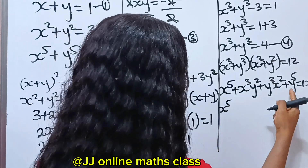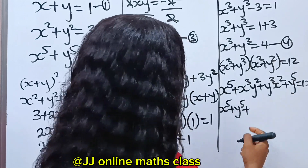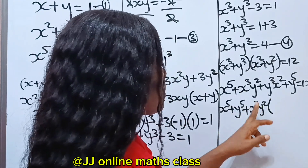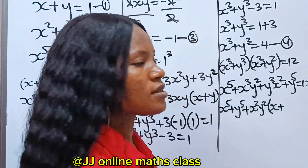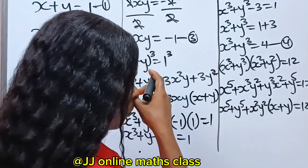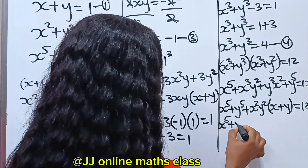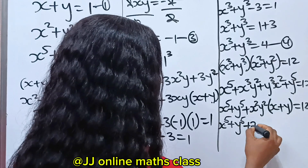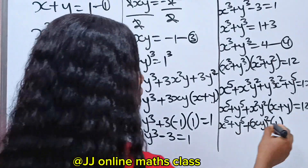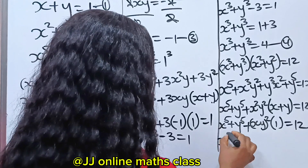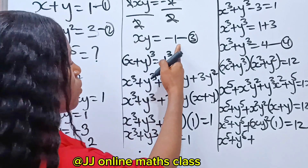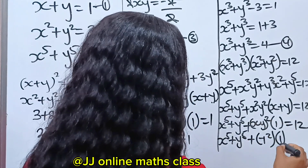Bringing x to the power of 5 and y to the power of 5 together, the middle terms x cubed y squared and y cubed x squared share x squared y squared in common. Factoring: x squared y squared times x plus y equals 12. Now x plus y is 1 from equation 1, and xy is minus 1, so this becomes x to the power of 5 plus y to the power of 5 plus (xy) squared times 1 equals 12. Since xy equals minus 1, (xy) squared equals 1, so x to the power of 5 plus y to the power of 5 plus 1 equals 12.